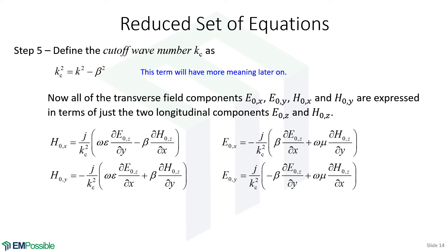When we make this substitution, the four equations look like this, with KC-squared being our wave number squared minus our phase constant squared. Our problem reduces simply to finding E-naught-Z and H-naught-Z. Once we know those functions, we plug them into these equations to get the remaining four field components — usually a very easy step. The hard part is finding E-naught-Z and H-naught-Z.